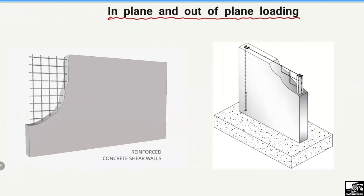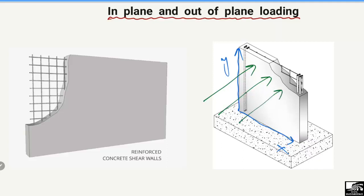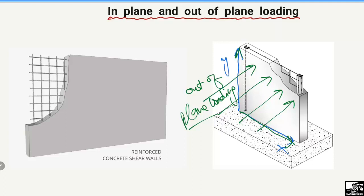Now for out-of-plane loading: again consider this retaining wall with its y-axis and x-axis. When the load acts neither along the y-axis nor along the x-axis — for example, if the load acts perpendicularly to the wall — such type of loading is called out-of-plane loading, because this load is out of the plane. The plane of the member is defined by the x and y axes, but here the load acts perpendicular to that plane.